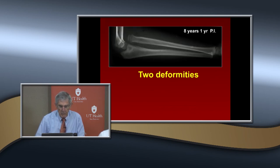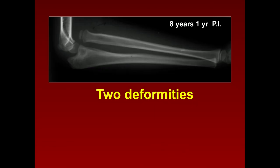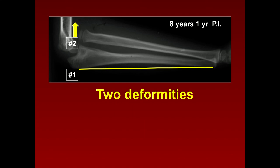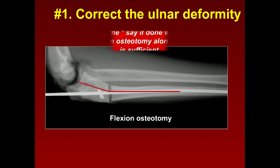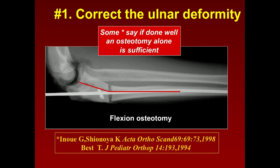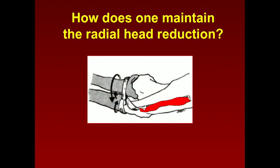Here's our patient who showed up one year post-injury. There are two deformities: the ulna is not straight and the radial head is persistently dislocated. First you do an extension osteotomy of the ulna — actually a flexion osteotomy to put it in extension. Some people say that's all you need to do. Others say you need to repair the annular ligament.